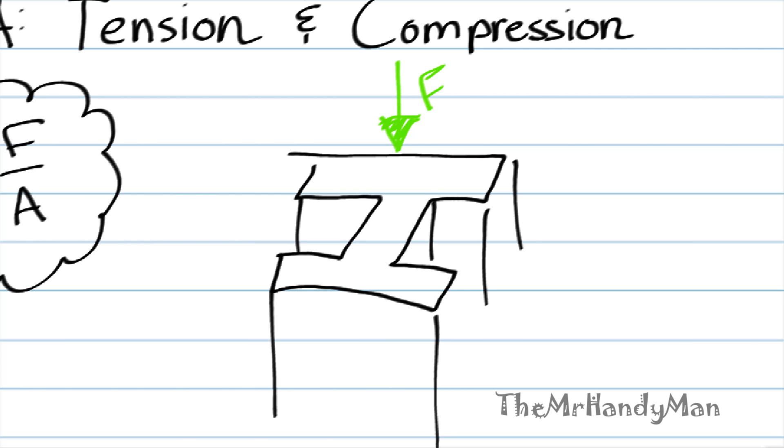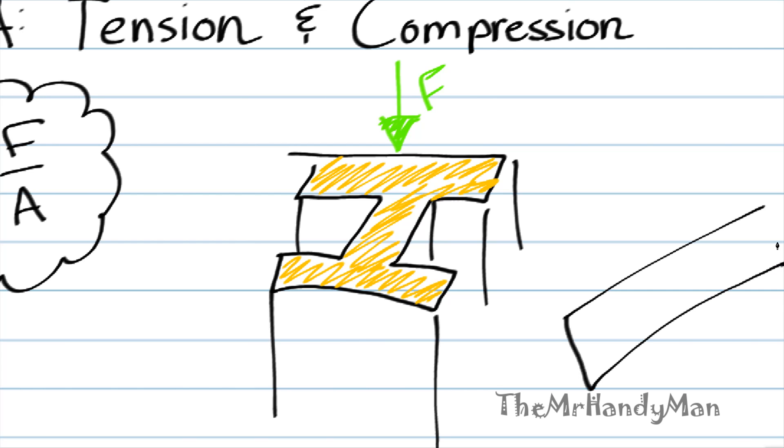And also the surface area, or the cross-sectional area I should say, of where the force is being applied to. So the force is actually traveling through this beam through the cross section of it. It's almost like if you were literally to take a bar and cut it. And that's what we refer to as the cross section, cross-sectional area.